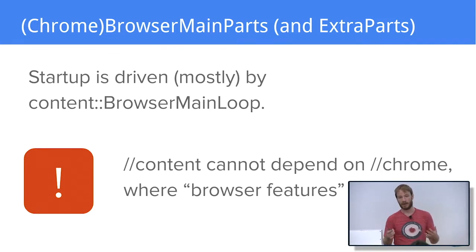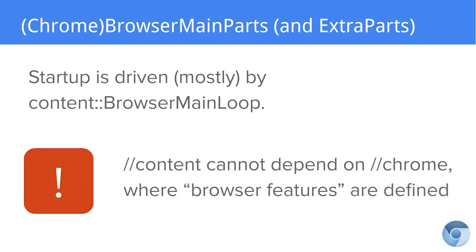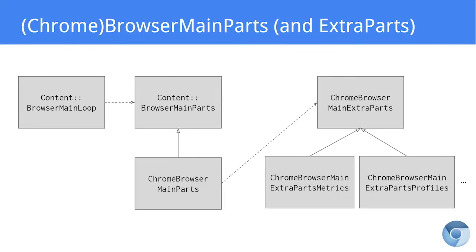Startup is driven by code that lives in the content directory, and the content directory can only contain the multiprocess browser architecture — it cannot depend on any features such as autofill or translate. So how do you integrate your component with startup? At different levels in the codebase, there are classes and interfaces you can implement to hook into the different startup phases I just described, without needing to add code in big functions that perform a lot of unrelated work.